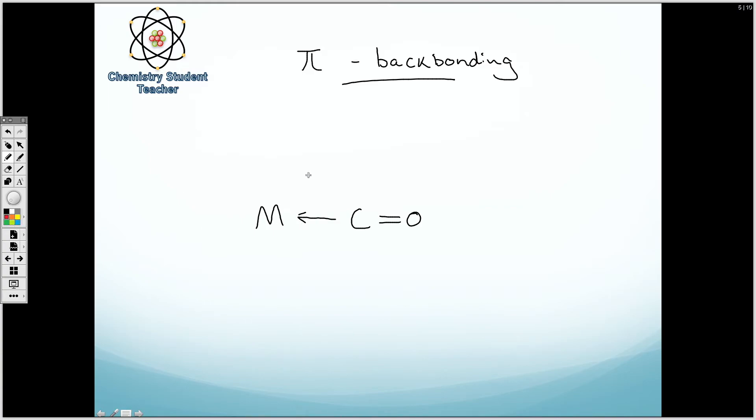We've got our nice metal here and we've got our coordinate bond going from the carbon to the metal. So the pi backbonding involves the pi bond, or not the pi bond, I should say the anti-bonding orbital of the pi bond.